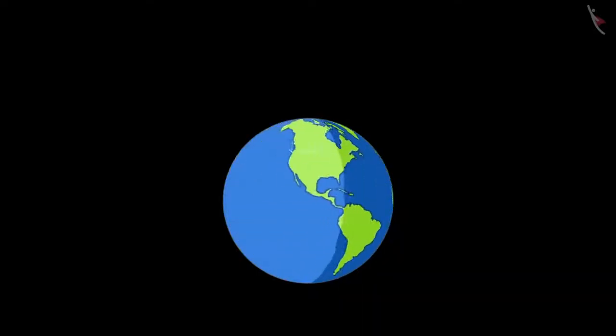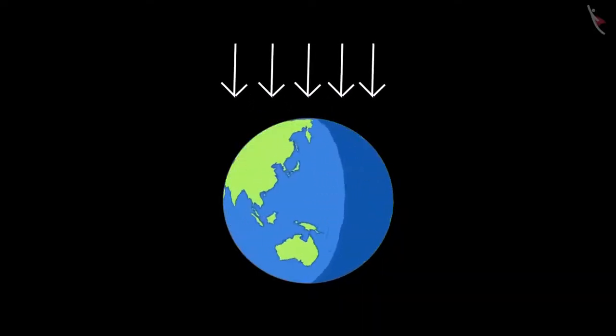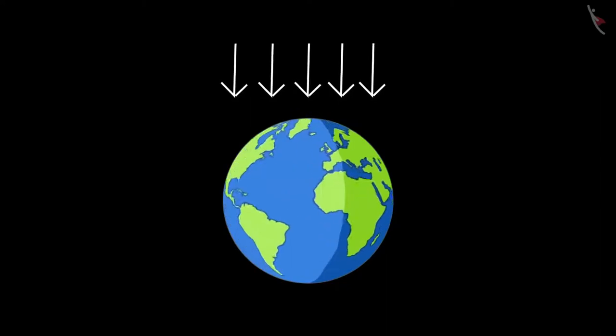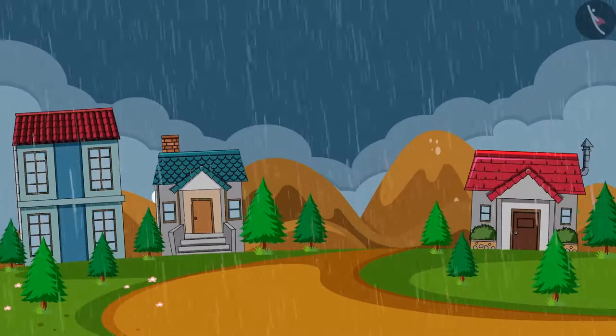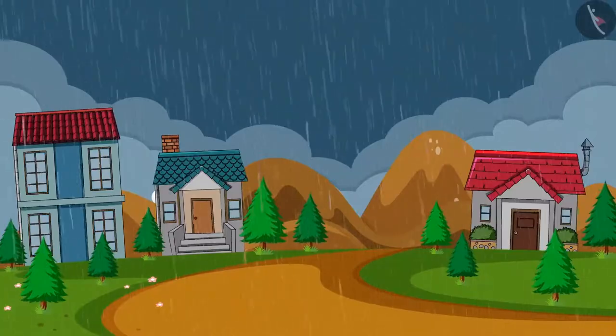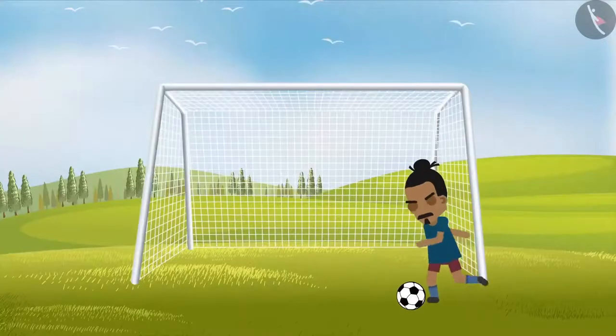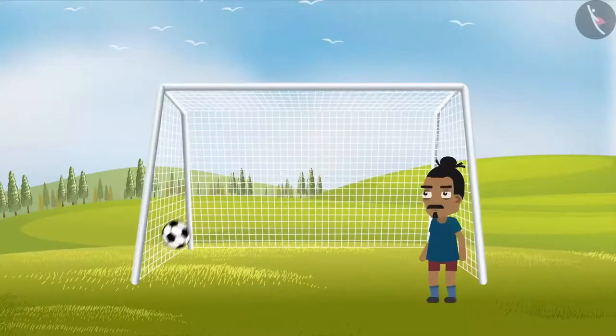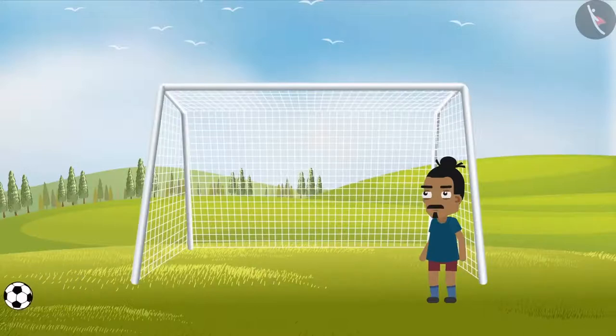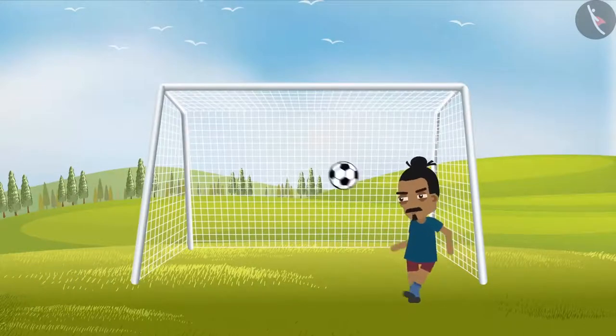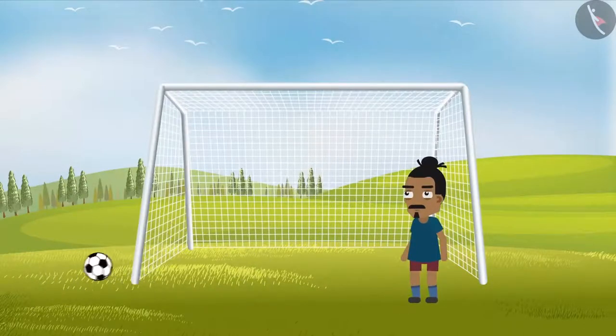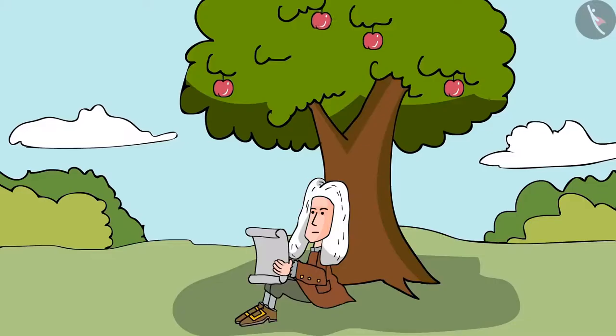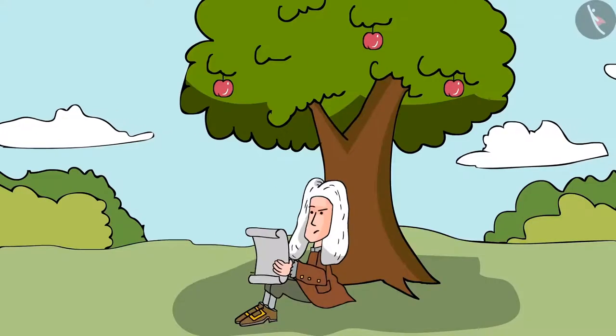Here are a few examples of objects attracted towards the earth. Rain always falls towards the earth. We observe that as soon as a football rises above the field, it falls back on earth. An apple detaching from the branch of a tree falls to the ground.